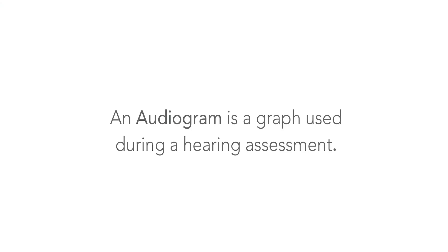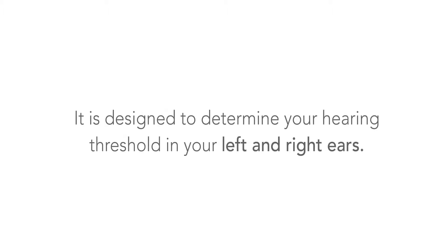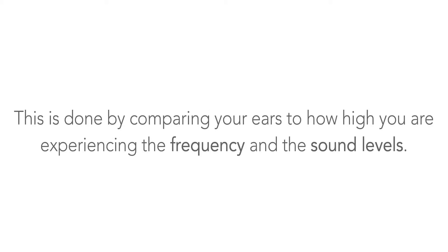An audiogram is a graph used during a hearing assessment. It is designed to determine your hearing threshold in your left and right ears. This is done by comparing your ears to how high you are experiencing the frequency and the sound levels.